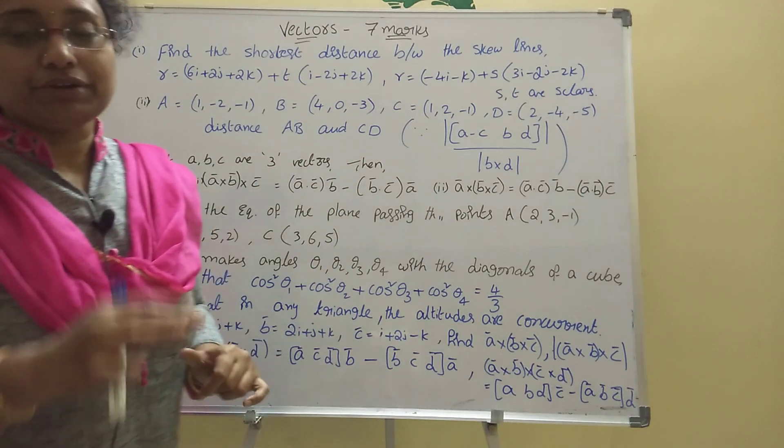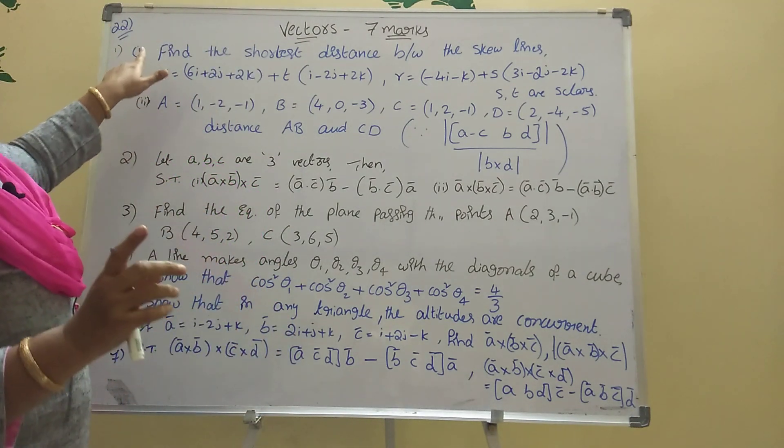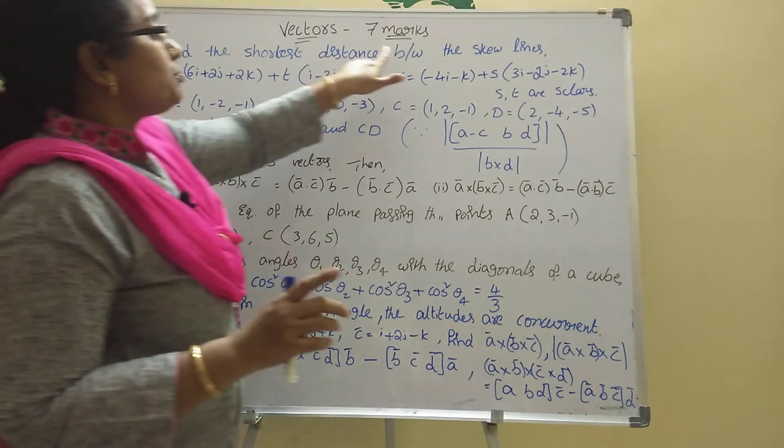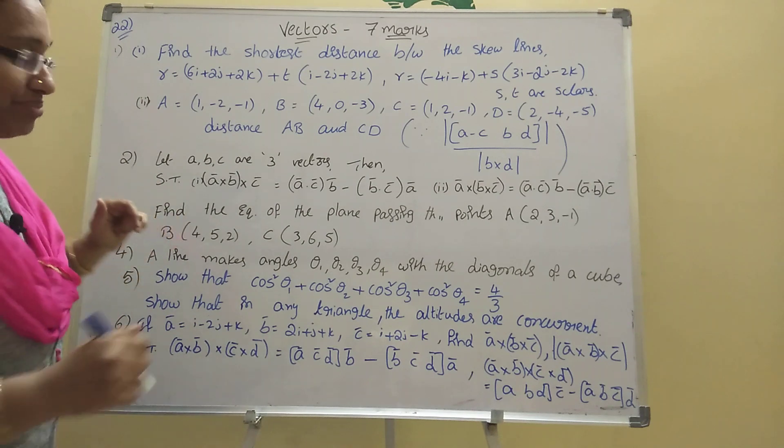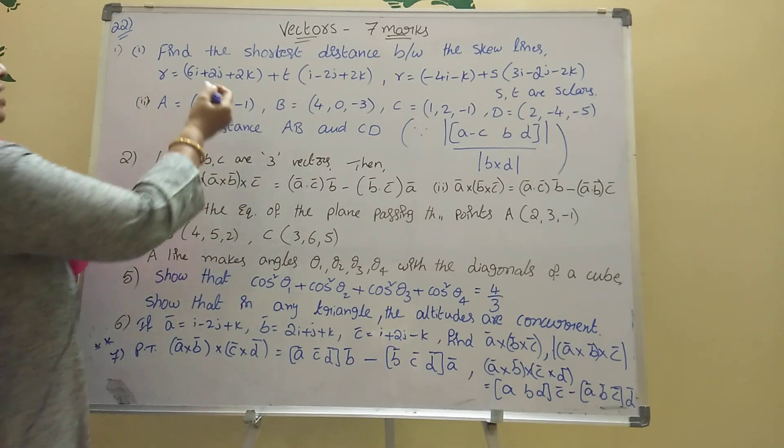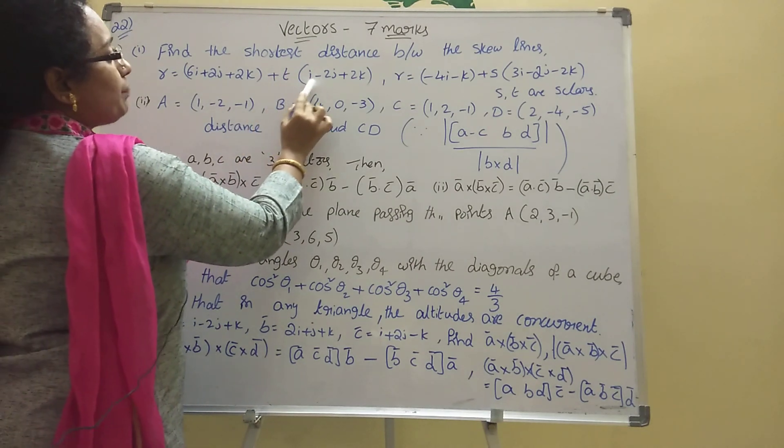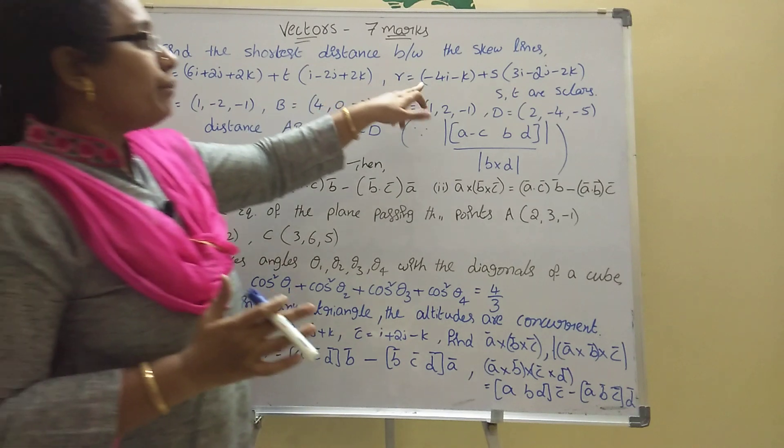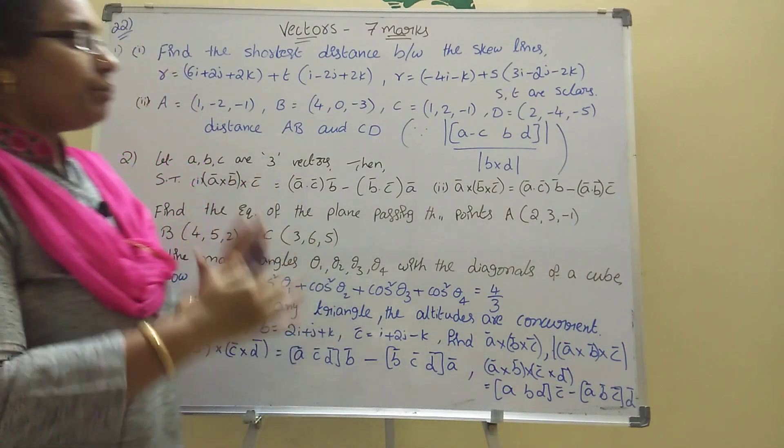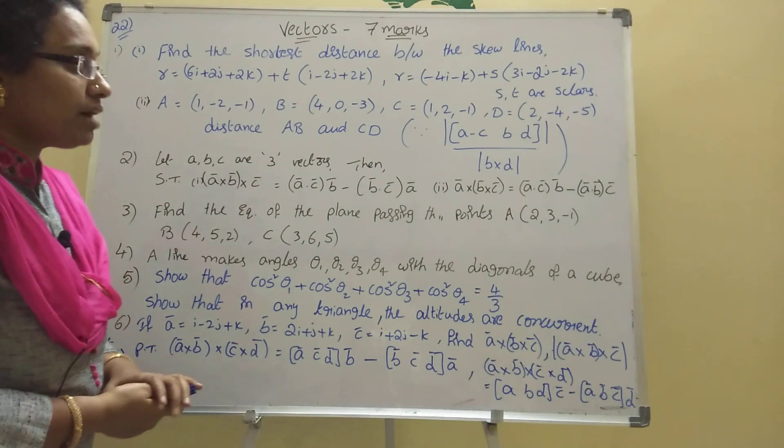Problem one: Find the shortest distance between the skew lines. First line: r = 6i + 2j + 2k + t(i - 2j + 2k). Second line: r = -4i - k + s(3i - 2j - 2k), where s and t are scalars.